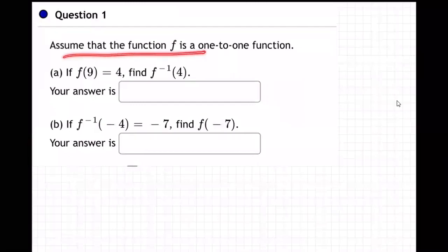Assume that the function f is a one-to-one function. That means there's one x value, one x for every one y. So one x for every one y is what we're to assume.